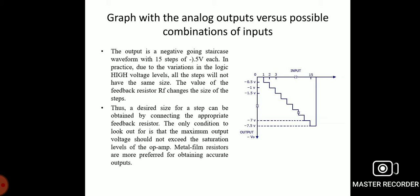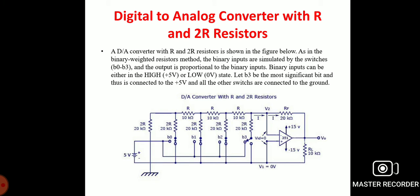Now we move on to the digital to analog converter with R and 2R ladder resistance. In a DAC with R and 2R resistors, as in the binary weighted resistor method, the binary inputs are simultaneously applied by the switches B0 to B3 and the output is proportional to the binary input. The binary input can be either high (positive voltage) or low (0 V).